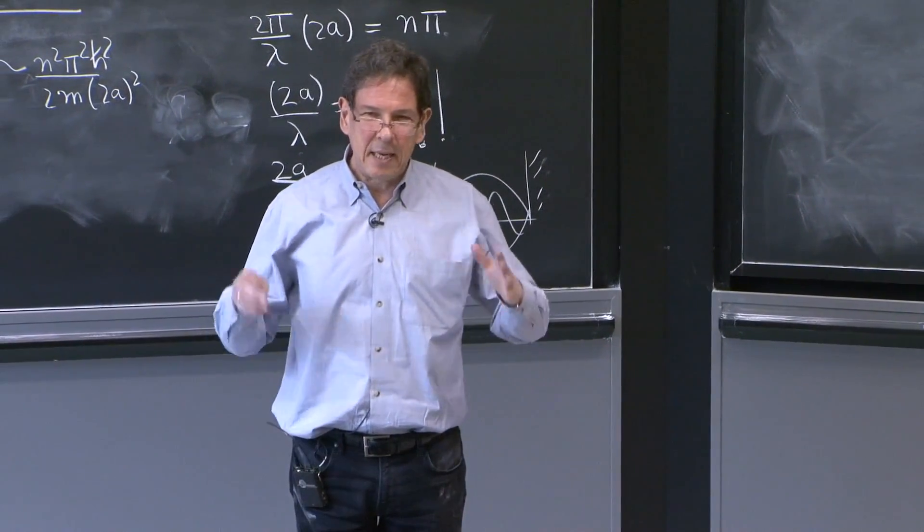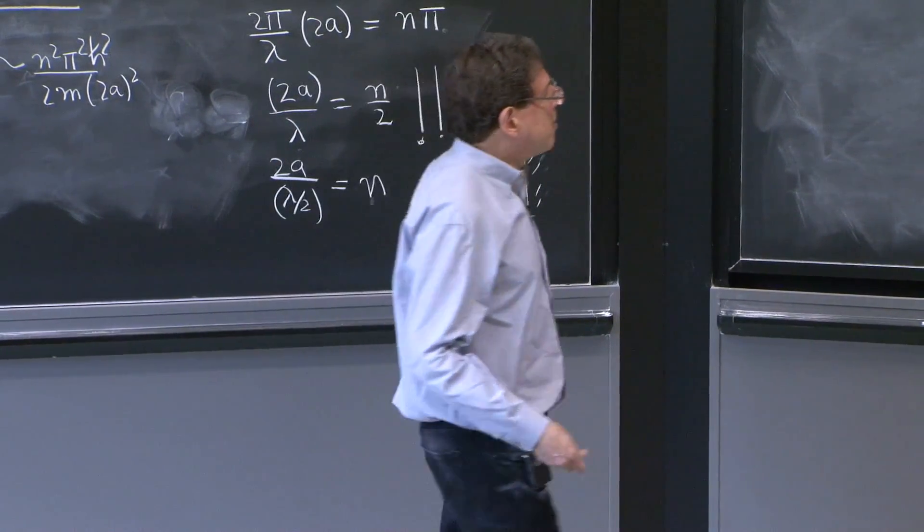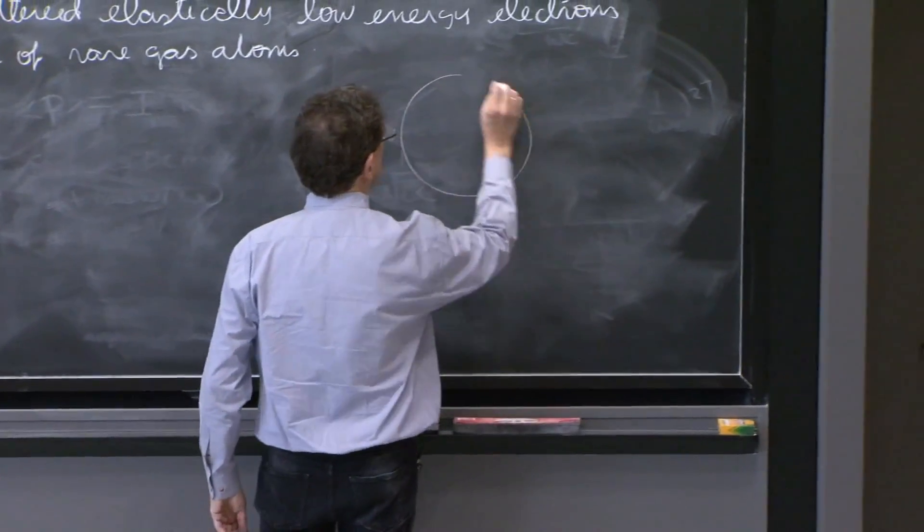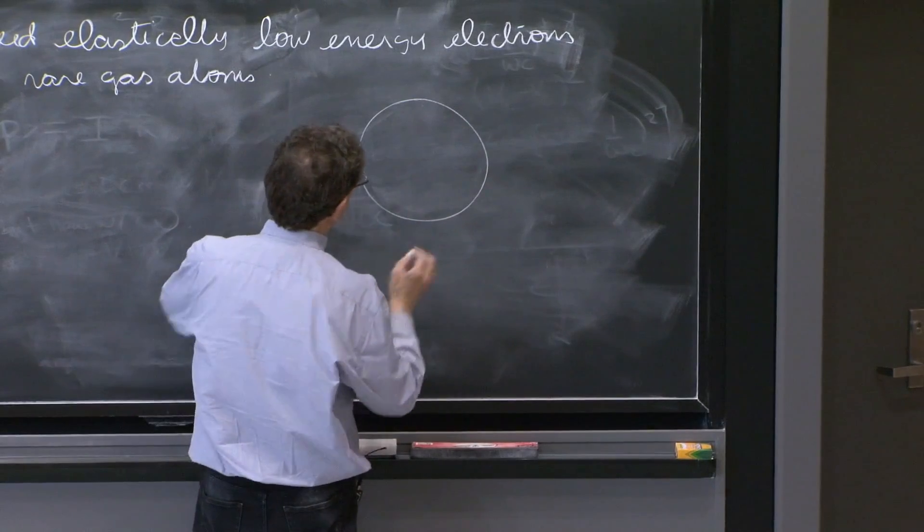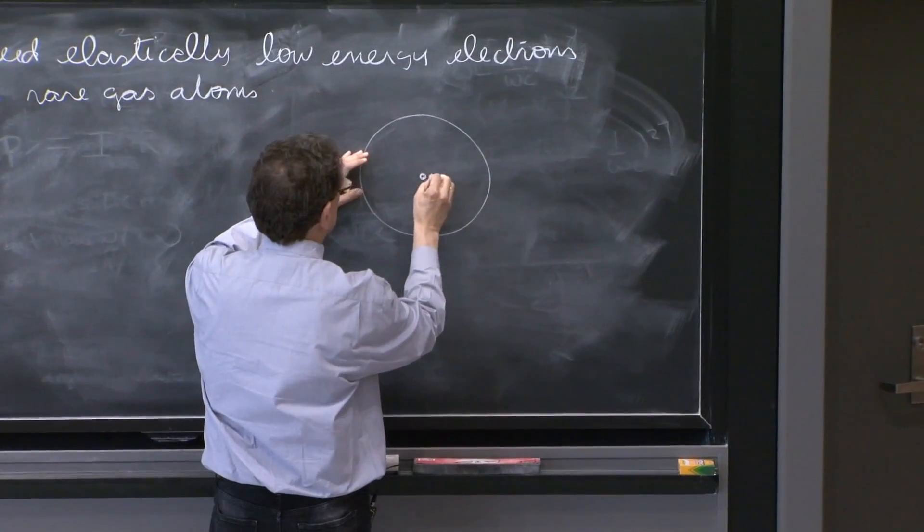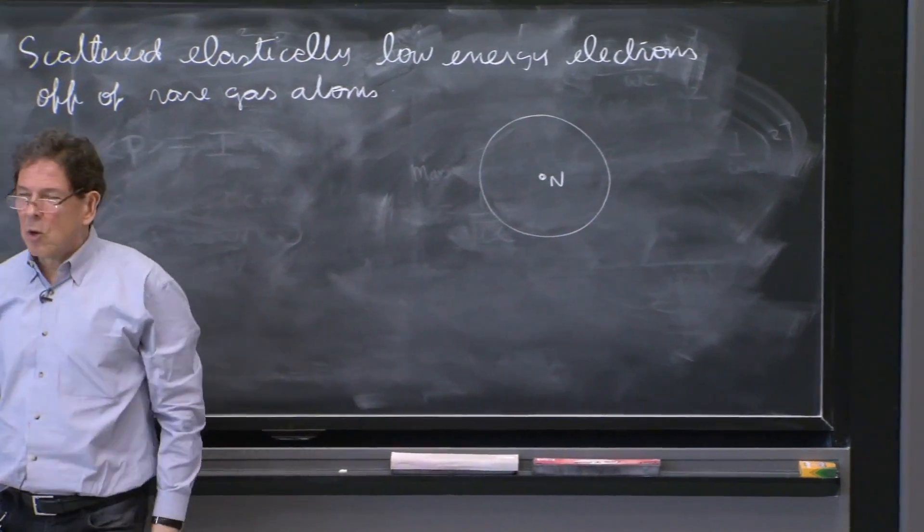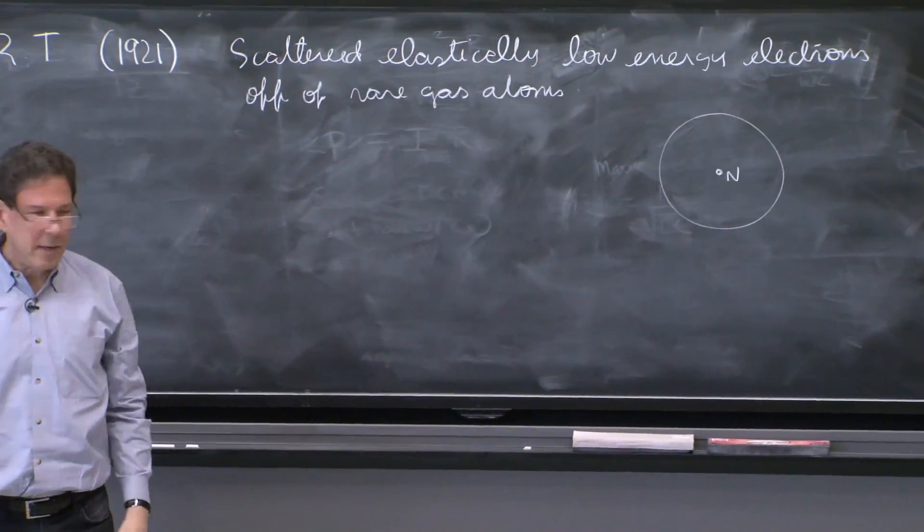So basically, it's a very unreactive atom. And you can imagine it as a very beautiful spherical cloud. There's protons, a nucleus here, and an electron cloud. So how does this look to an electron?